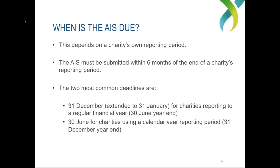Similarly, an organisation that reports to a calendar year from January to December would have their Annual Information Statement due six months after the end of their reporting period — being end of December — meaning their AIS would be due by the end of June. The two most common deadlines are 31 December for charities reporting to the regular financial year, and 30 June for charities using the calendar year reporting period.